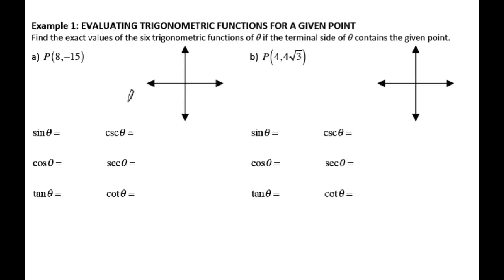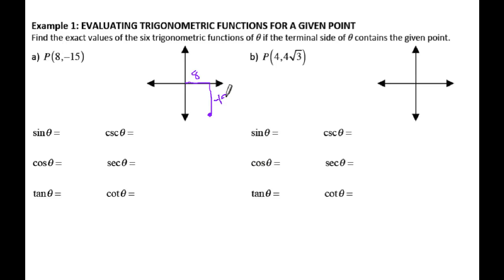The first thing you want to do to get a feel for where your triangle is is to actually plot the point or sketch out where it would be. So (8, -15) is somewhere in the fourth quadrant. I would have to move over 8 units to the right, move down 15 units, and then you're going to have this triangle with theta right in there.